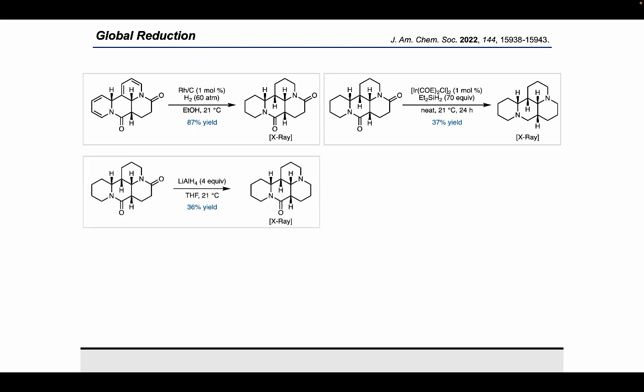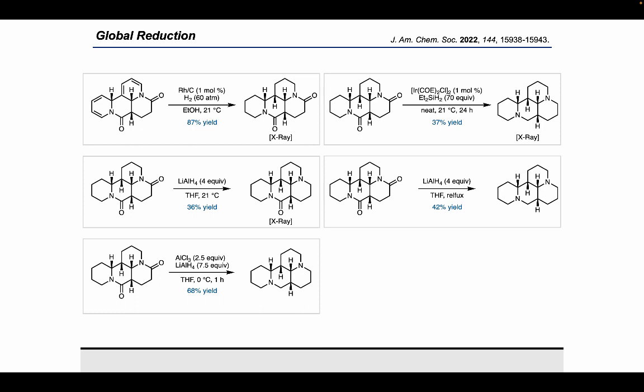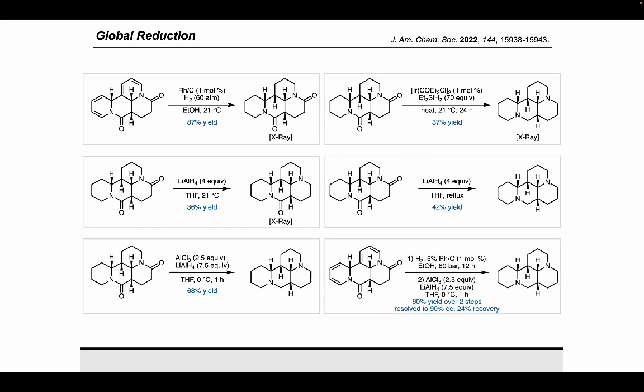Interestingly, when we switched to lithium aluminum hydride in an attempt to boost the yield, which is a more canonical reduction agent, we only got a 36% yield of the monoreduction product. And it wasn't until we heated the reaction up to reflux that we were able to get a 42% yield of the desired diamine. Alane proved to be the most successful, giving us a 68% yield of the desired diamine, and we found that we could do the hydrogenation and then subsequently the alane reduction and then perform a purification at the end of this entire sequence to give 60% yield of the desired diamine via recrystallization of its hydrogen oxalate salt. We could also perform a tartrate resolution to give us over 90% EE and 24% recovery of the diamine.